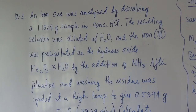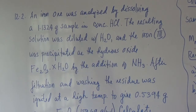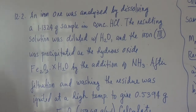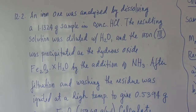So when you say gravimetric analysis, you have the solution of the sample — making it into a solution, or it could be an aqueous solution. Then after that, it would be precipitated. The precipitate should be of known composition. Then after precipitation: filtration, then washing of the precipitate, then drying. So that is the process of gravimetric analysis. And for the computation, everything is stoichiometry.